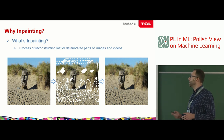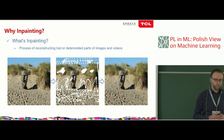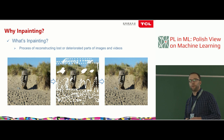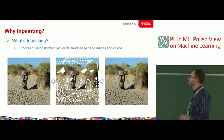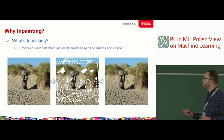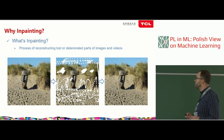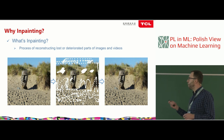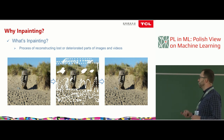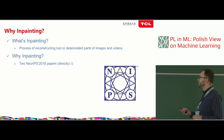What actually is in-painting? The answer is quite simple. It is a process of reconstructing lost or deteriorated parts of images or videos. Like in this example, we have an input image, we put some mask on it, and we are trying to reconstruct the missing parts of the image based on the neighborhood.